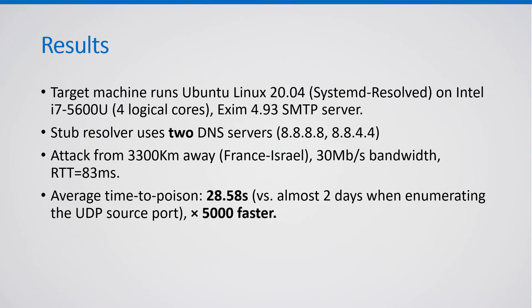We tested this attack on a machine with four logical cores running Ubuntu Linux with systemd-resolved stub resolver and Exim SMTP server software, configured to use two DNS servers. The attack took place from over 3,000 kilometers away with modest bandwidth and a very typical RTT — a very realistic scenario. We obtained an average time to poison of just under 29 seconds versus almost two days with a brute force attack, making our attack 5,000 times faster.